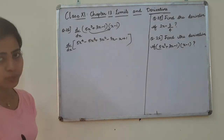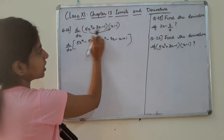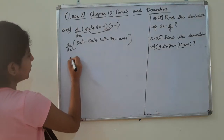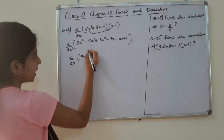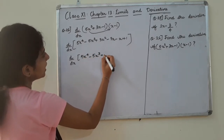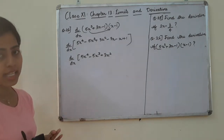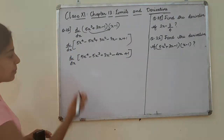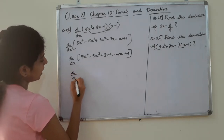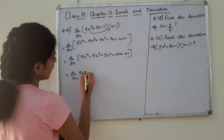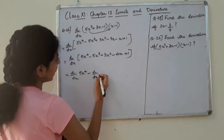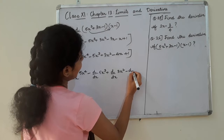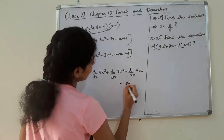We will expand and separate it. D by dx of 5x raised to 4, minus d by dx of 5x cube, plus d by dx of 3x square, minus d by dx of 4x cube, plus d by dx of 3x square, minus d by dx of 4x, plus d by dx of 4x cube, and d by dx of 1.